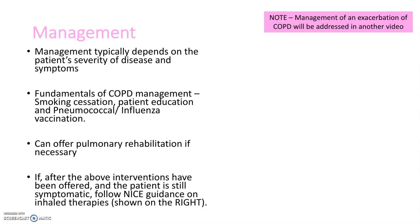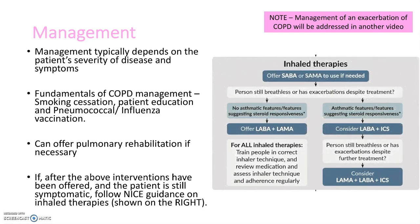After these steps have been offered and the patient remains symptomatic, NICE guidance is used to introduce inhaled therapies. The first step is to offer a PRN SABA inhaler such as salbutamol. If the patient still has problems with breathing, you then consider whether asthma may be present. If you are certain it is not asthma, offer a LABA and a LAMA. If asthma is a possibility, a trial of inhaled corticosteroid is introduced, though patients with COPD typically do not respond to steroids.